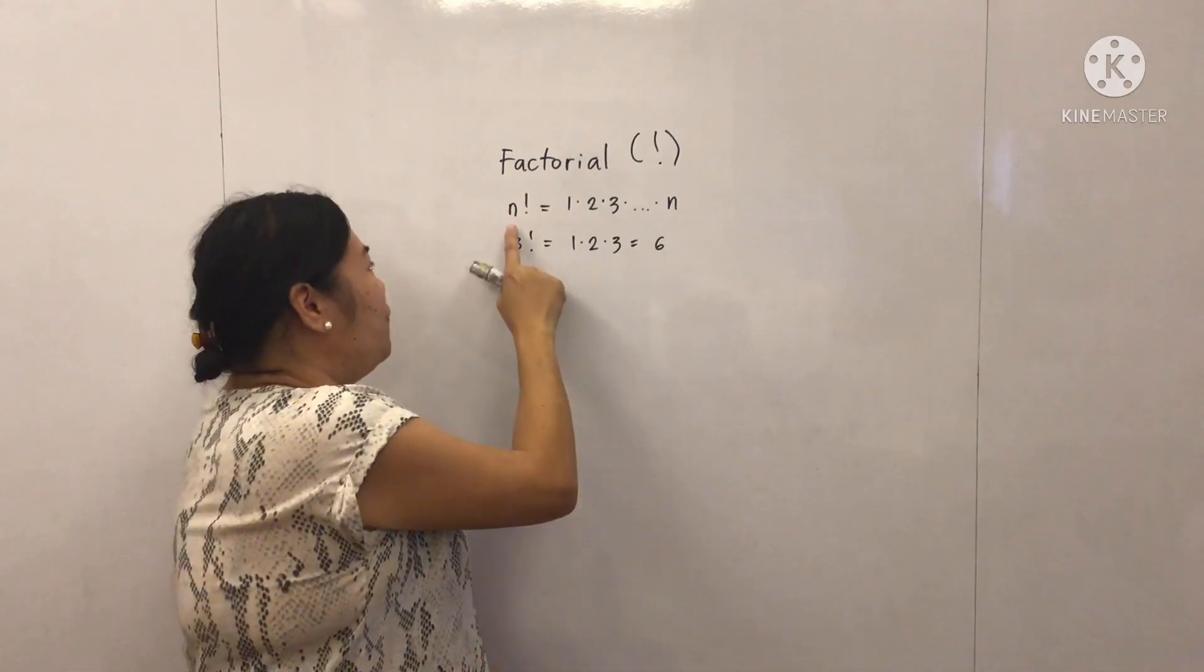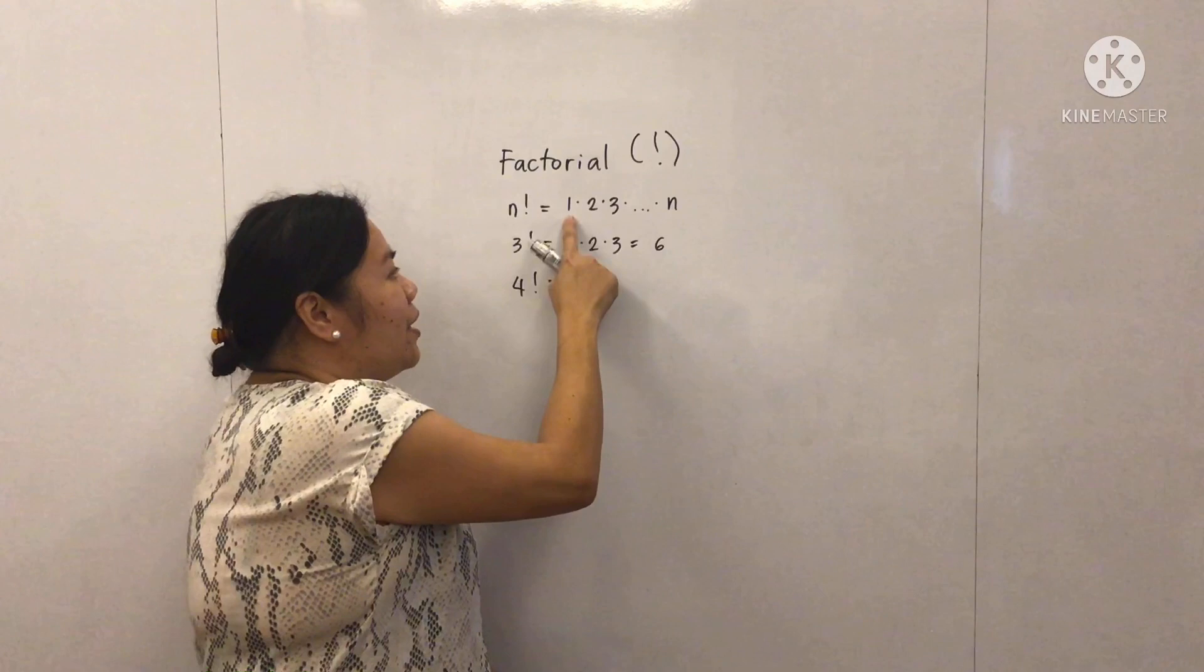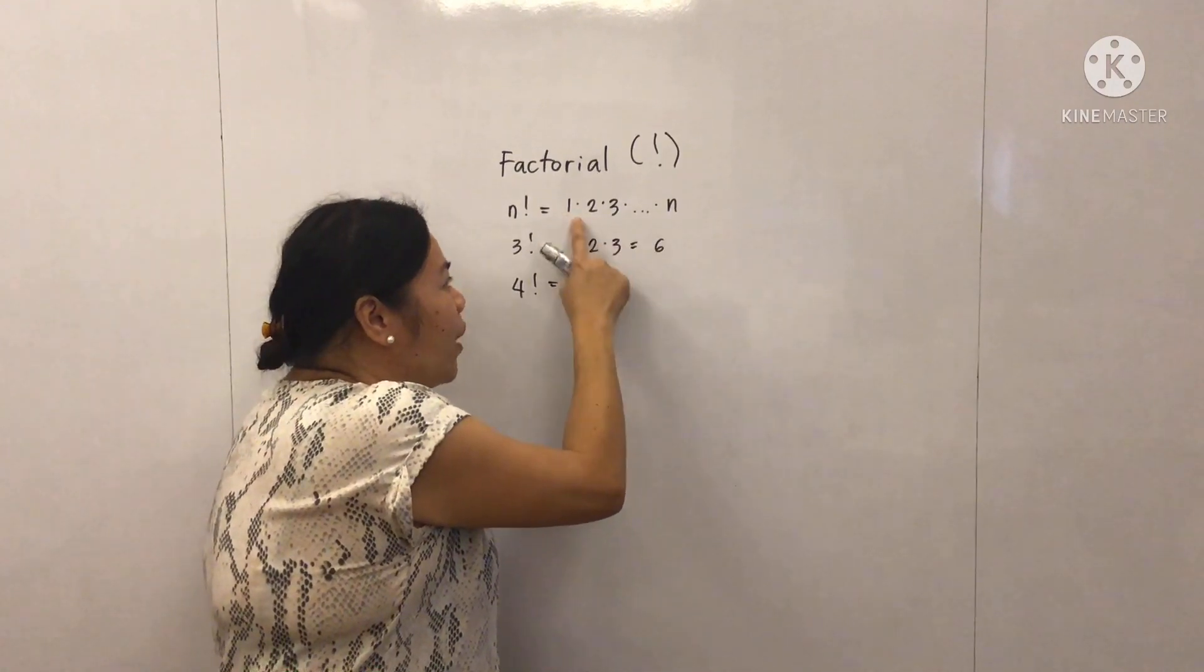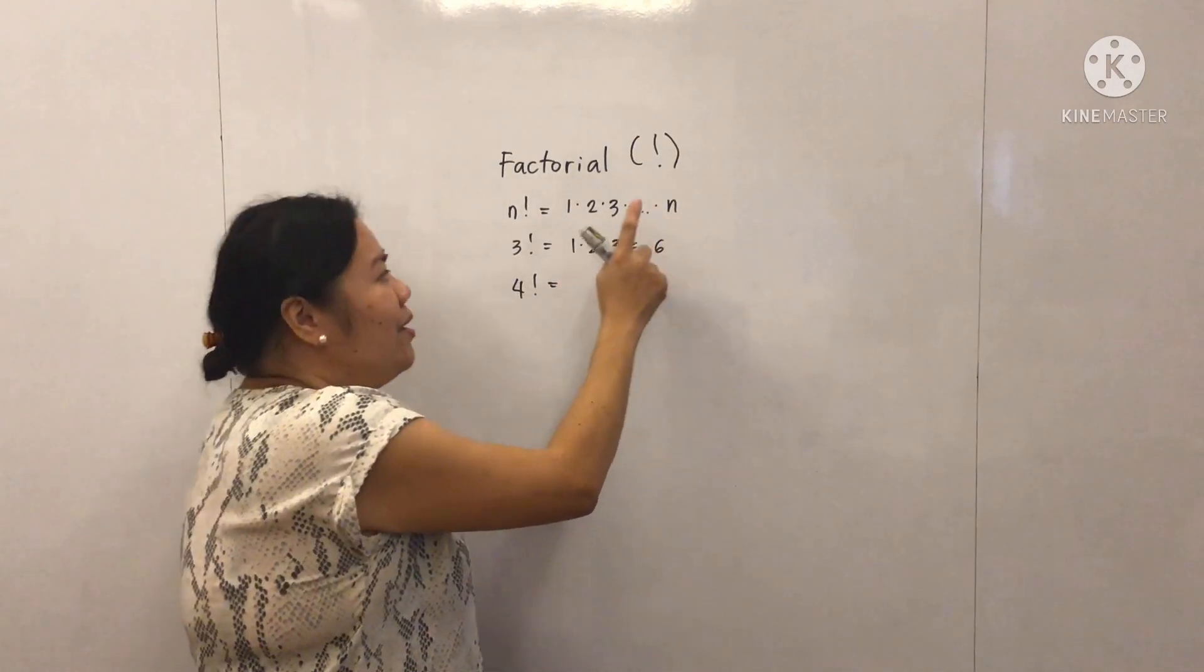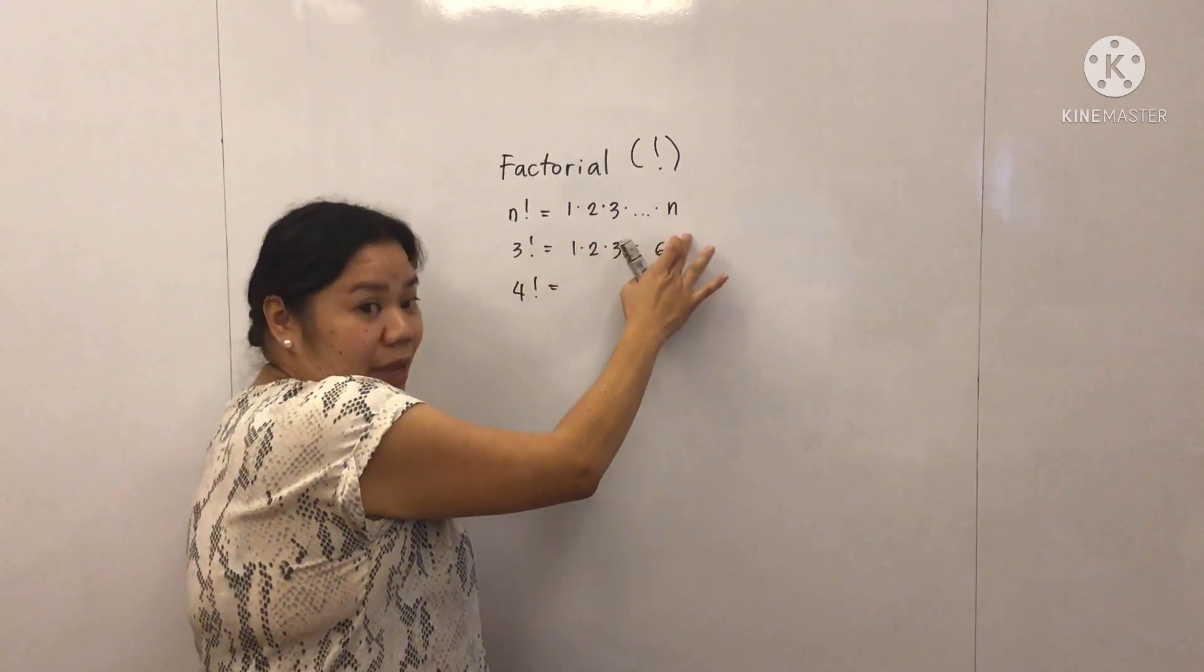And so, if we are to solve n factorial, it just means the product of 1 up to n. Okay, so n factorial equals 1 times 2 times 3 up to n.